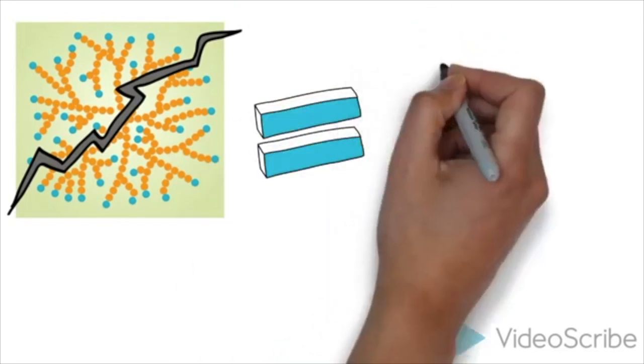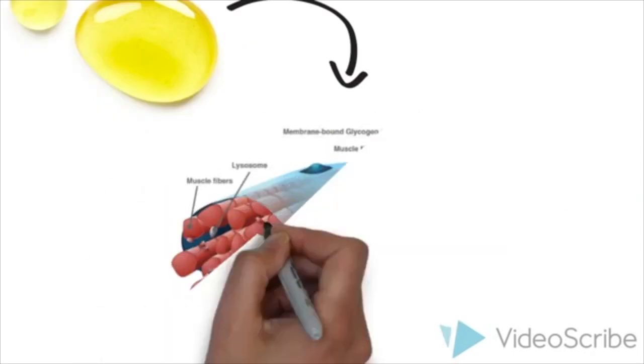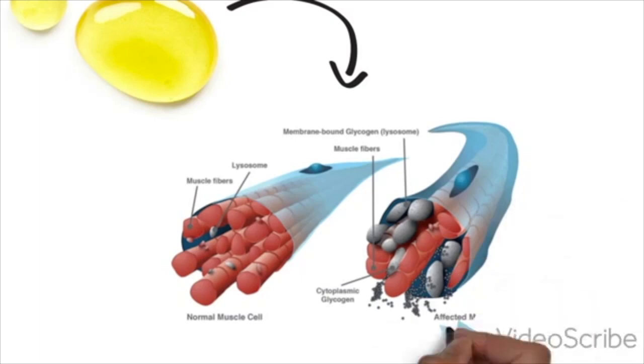Glycogen is a thick, sticky substance and failure to properly break it down results in massive accumulation of lysosomal glycogen in cells, particularly in cardiac, smooth, and skeletal muscles.